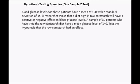We have a question about blood glucose levels for obese patients. We're given a population mean and standard deviation, and a researcher thinks a diet high in raw cornstarch will have a positive or perhaps negative effect on blood glucose levels. A sample of 30 patients who tried the raw cornstarch diet have a mean glucose level of 140, and we need to test the hypothesis that raw cornstarch had an effect. Let's break it down into small steps.